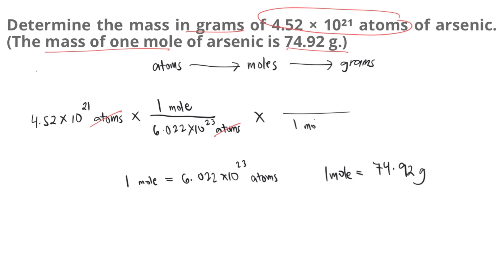So you put 1 mole below, you put 74.92 grams on top. As you can see, the mole would cancel out and our final unit is grams. Now that we have our final unit, we can solve this equation.